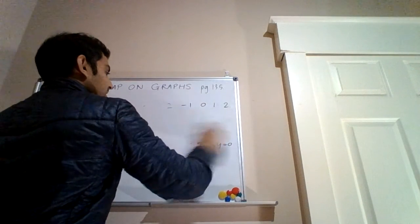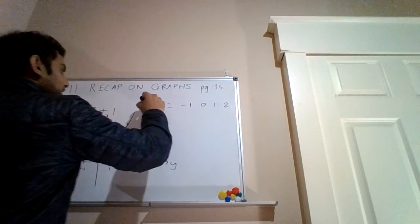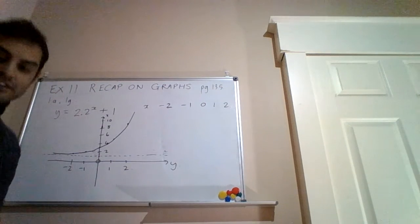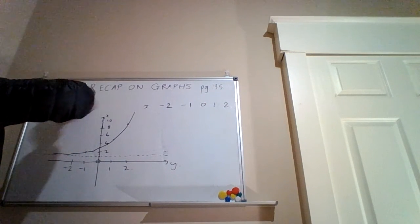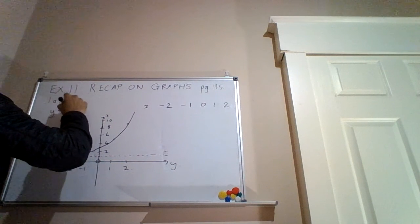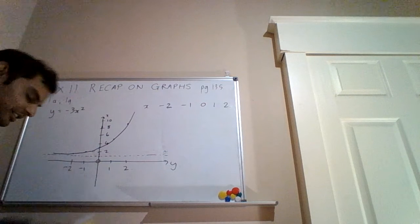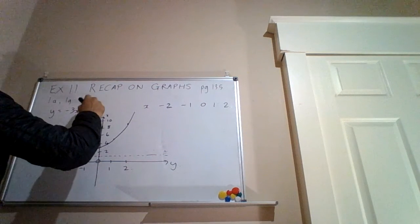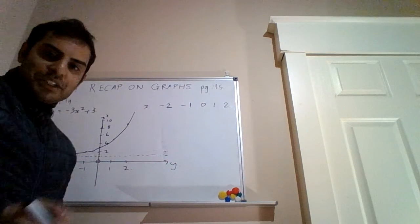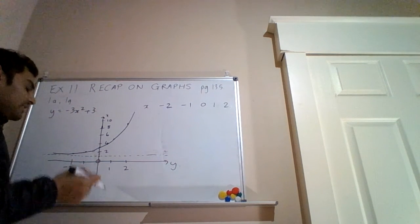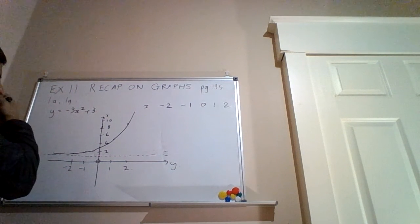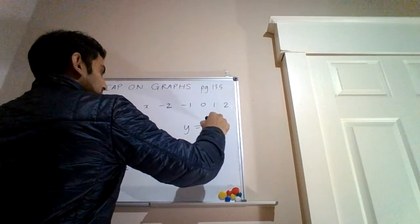Now let me set up the parabola. My x-values are: minus 2, minus 1, 0, 1, 2, and the equation is y equals minus 3x squared plus 3. To sketch a parabola we need the turning point and the roots.